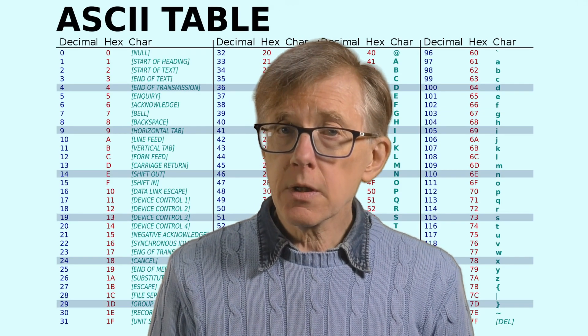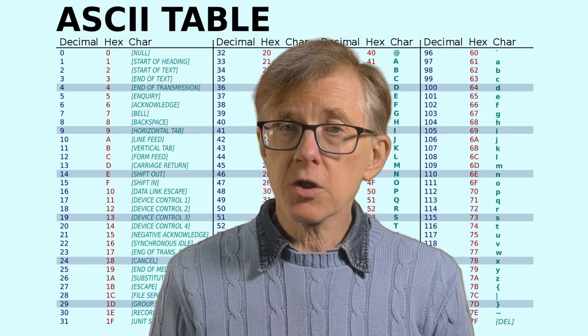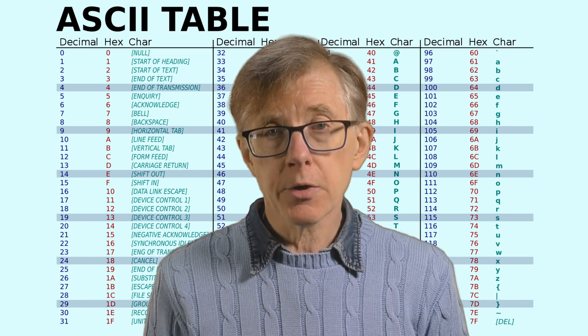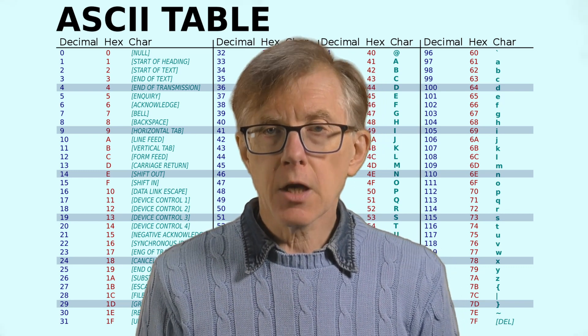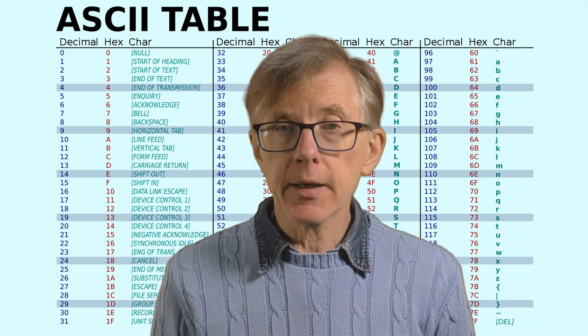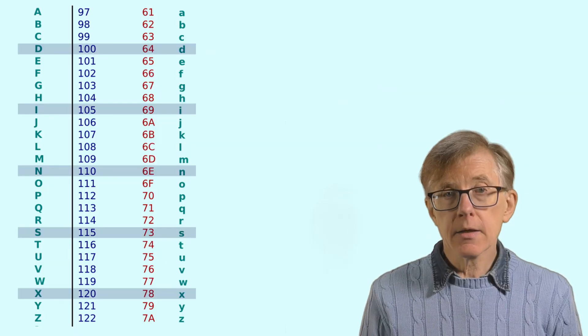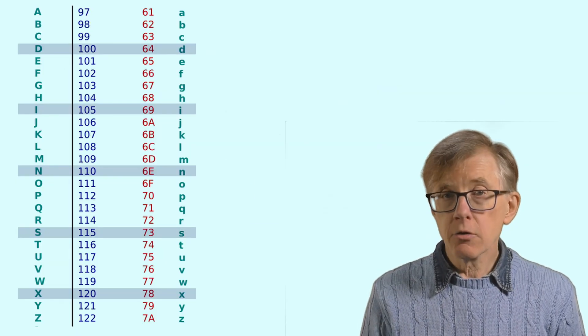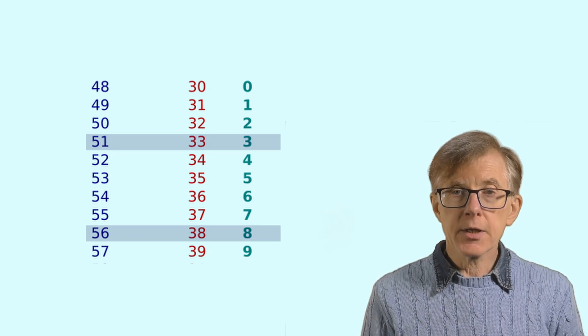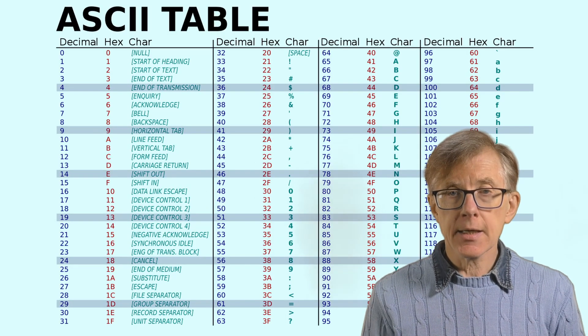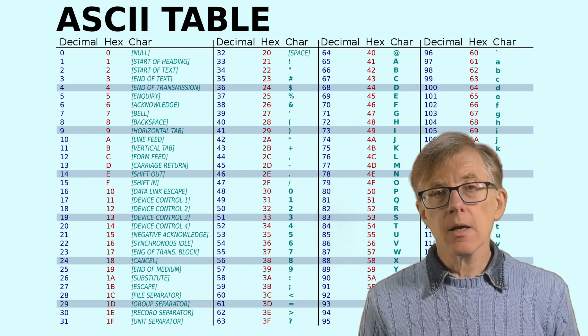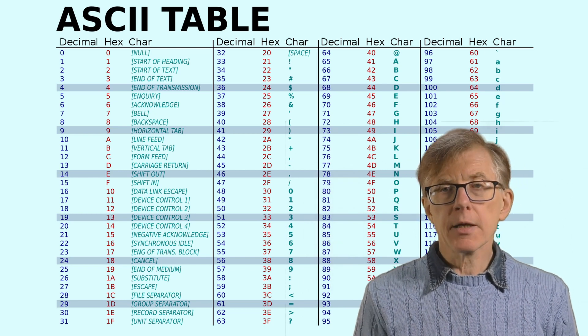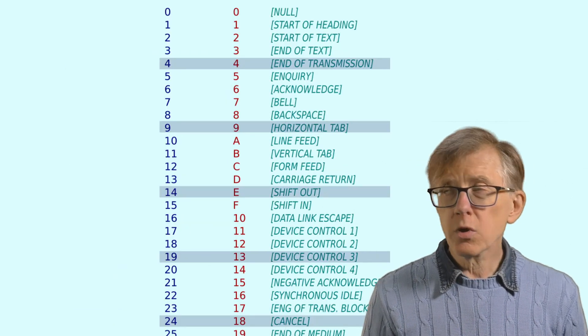Remember the ASCII table I showed back in the lesson about characters and strings? Well, this shows the numeric codes of some of the most common characters we use in our programs. Some of these codes represent alphanumeric characters, such as A to Z, or 0 to 9. Other codes represent characters such as at signs, dollars, percents, punctuation, and mathematical operators. But what about these?